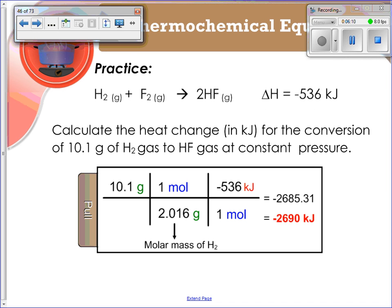All right, so let's practice that. We've got the example written right below. It says, calculate the heat change in kilojoules for the conversion of 10.1 grams of H2 gas to HF gas, hydrogen fluoride, or hydrofluoric acid gas, at a constant pressure. Let me re-change that. Hydrogen fluoride gas. It's a correct way of saying that. At constant pressure.